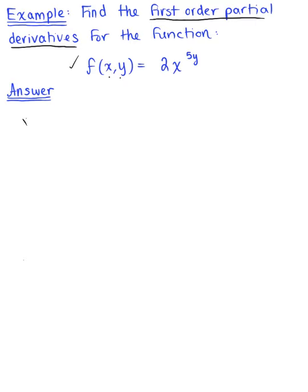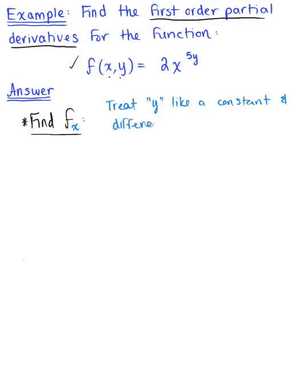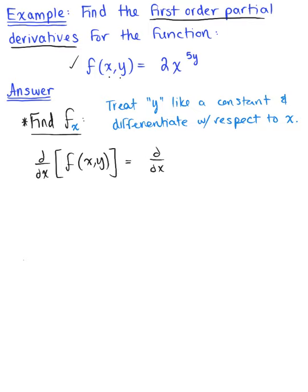Let's start with finding the partial derivative of this function with respect to x. It's crucial to keep in mind what we are differentiating with respect to. Here we are differentiating with respect to x, so we will treat y like a constant or like a real number, and differentiate as if we have a single variable function. So we have d/dx of 2x raised to the 5y.